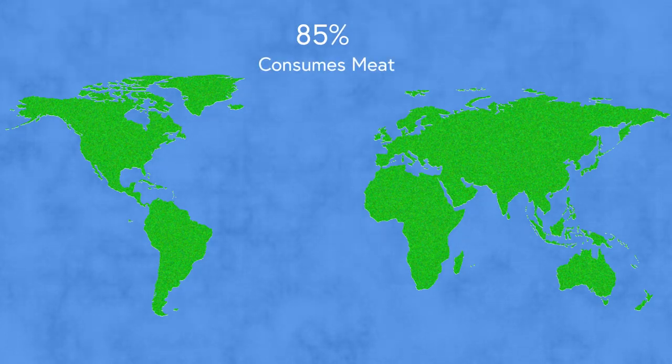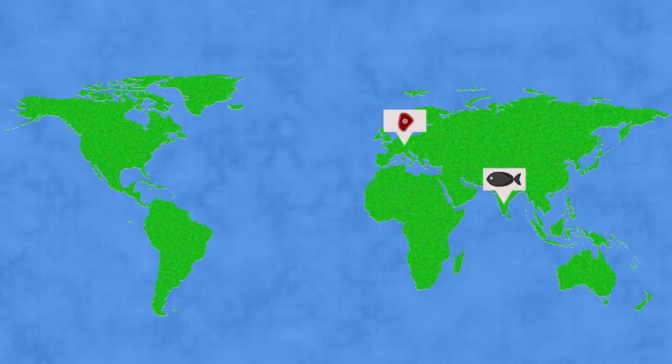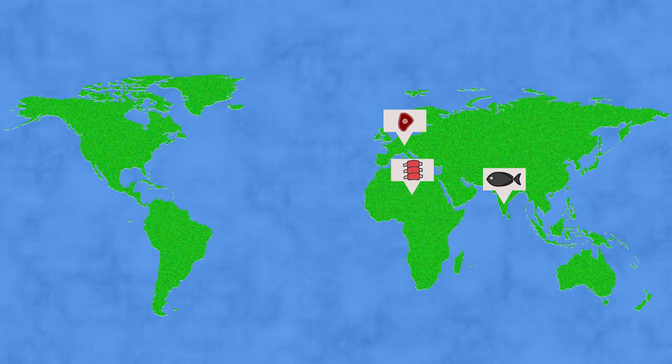Over 85% of the world's population consumes meat. Whether it's beef from Central Europe, fish from South Asia, or mutton from Northern Africa, meat is a staple in the diets of most cultures around the world.